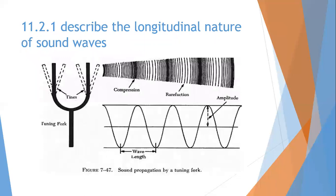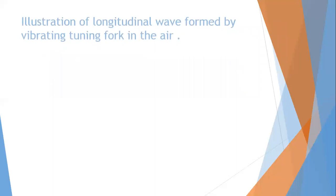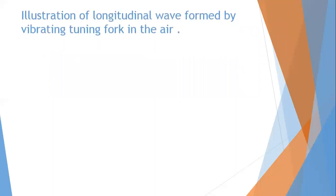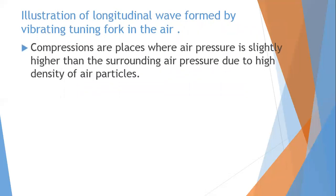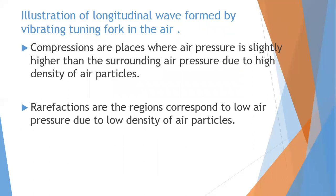Describing the longitudinal nature of sound waves is our second SLO. Sound is an example of longitudinal waves — it consists of compressions and rarefactions. When we hit the tuning fork, it vibrates: when it moves to the right, compression occurs, and when it moves to the left, rarefaction occurs. Compressions are places where air pressure is slightly higher than the surroundings, and rarefactions are regions where the air pressure is lower than the surroundings.